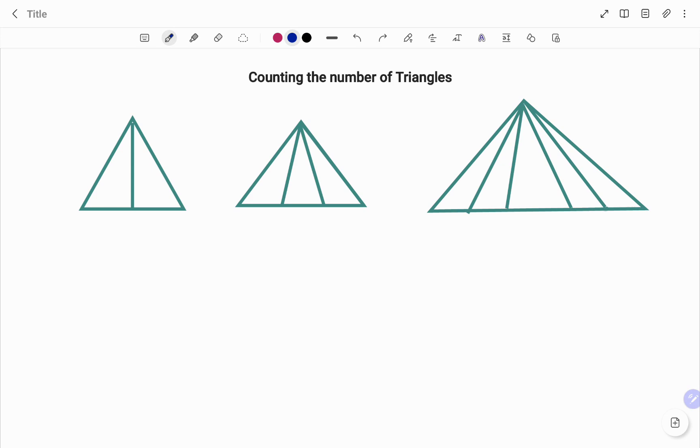In the first diagram, to calculate how many triangles we have, we'll start by labeling each triangle. We have 1 and 2. Therefore, the total number of triangles we have will be 1 plus 2 triangles, which will be 3.